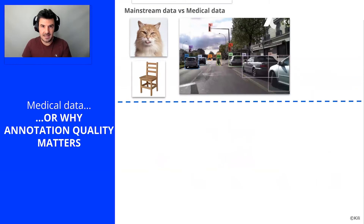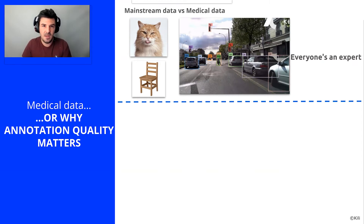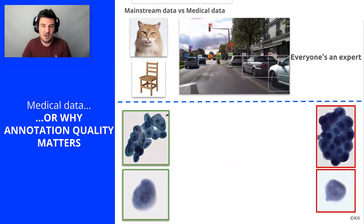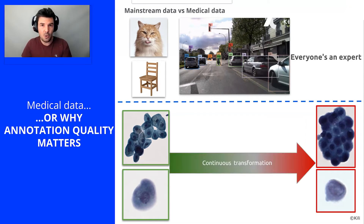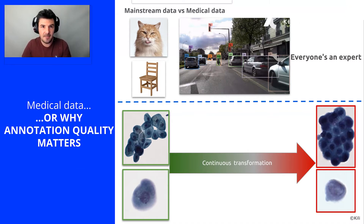The second constraint is medical data. In the domain of classical images, the objects are rather simple and the classes relatively well separated, so anyone can annotate these images. In the domain of medical images, however, the objects are rather complex and the classes rather poorly separated — because they are biological objects in continuous transformation. So between the various objects on the left and the very atypical objects on the right, we'll find a vast amount of intermediate stages in our slides, and these objects will be difficult to classify even by experts.